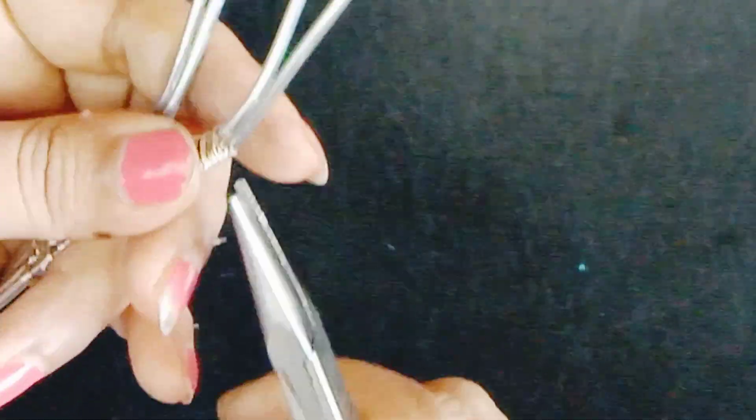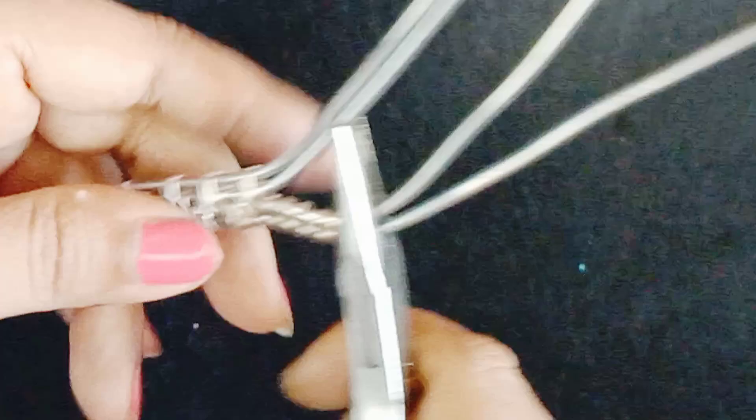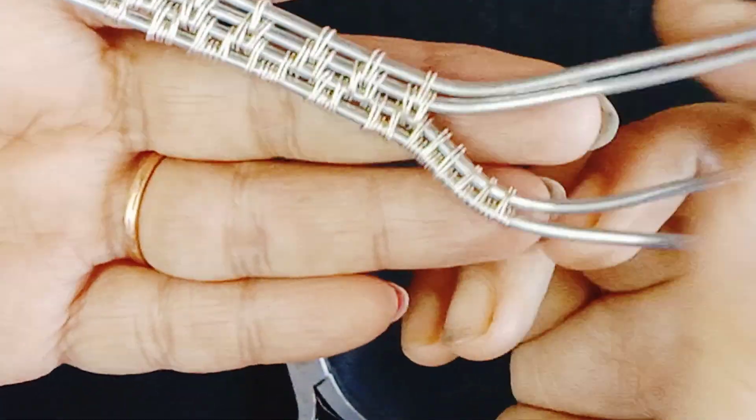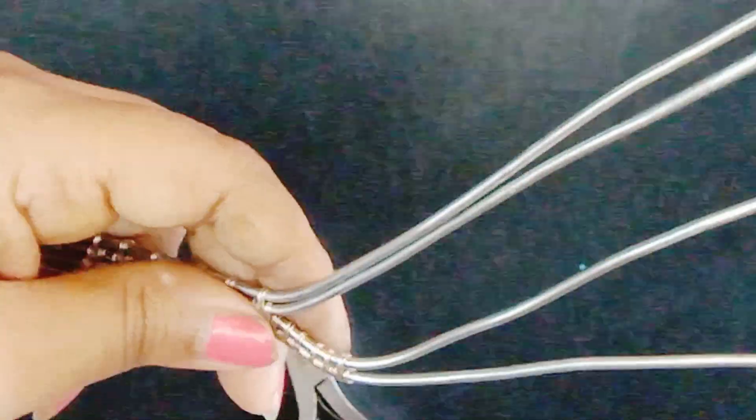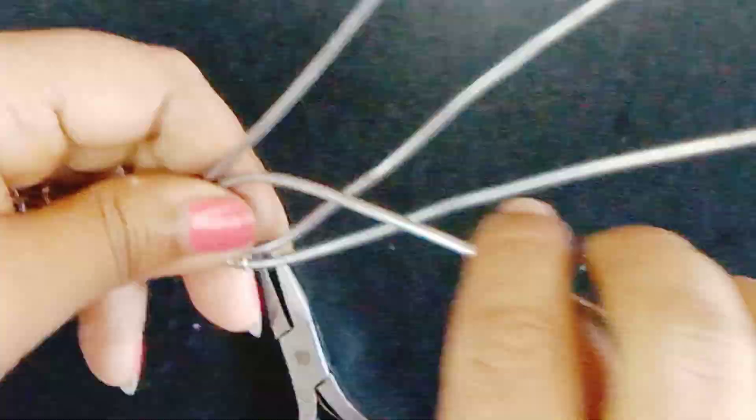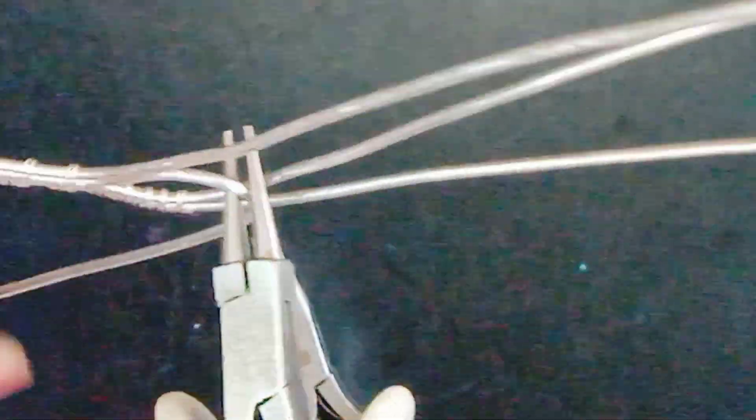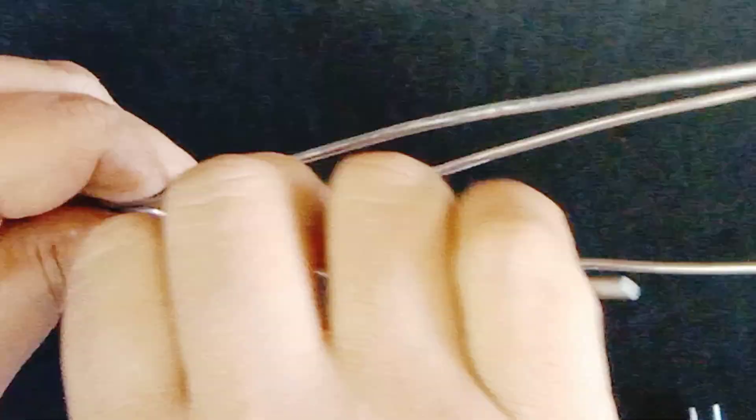My wrapping wire has ended here, so I have to add more wire for this. Now I am going to make an eyeball-like structure with this third wire in this way.